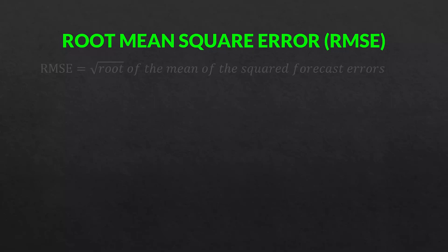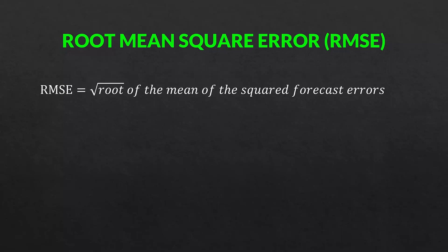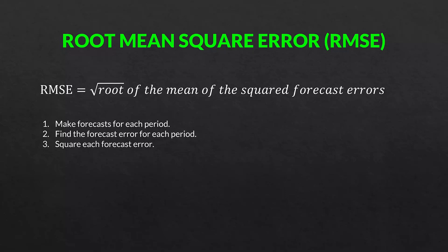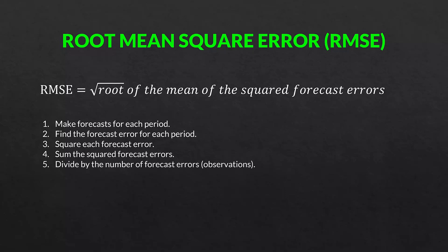So, root mean square error or RMSE. The root mean square error is just the square root of the mean of the squared forecast errors. We make a forecast for each period, find the forecast error for each period, square each forecast error, sum the squared forecast errors, divide by the number of observations — that's the mean part — and then take the square root to return to the original units. If you have learned linear regression, this is basically the same thing you see in regression output for mean square error and root mean square error.